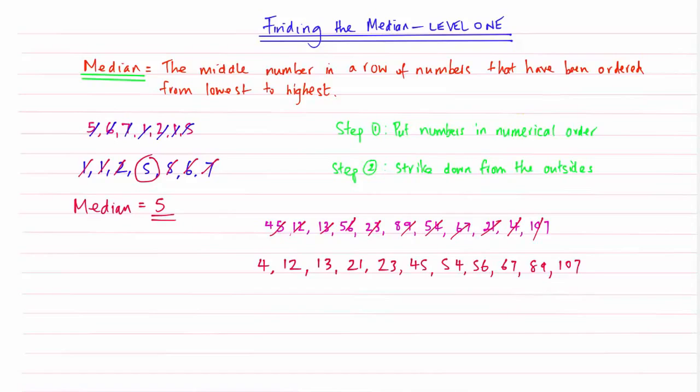And all that is left is for me to strike down from the outside. Making sure I do one side at a time. This side and a 13. That side and a 54. And a 23. So as you will find, my median has been isolated in the middle there.